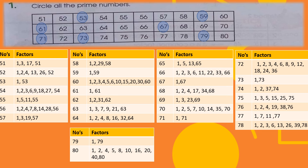We have a question in which we have to circle all the prime numbers in a given table. We found the factors of all available numbers and identified that 53, 59, 61, 67, 71, 73 and 79 are prime numbers because they all have only two factors and are exactly divisible by 1 or by themselves. All the remaining numbers have multiple factors and are not considered prime.